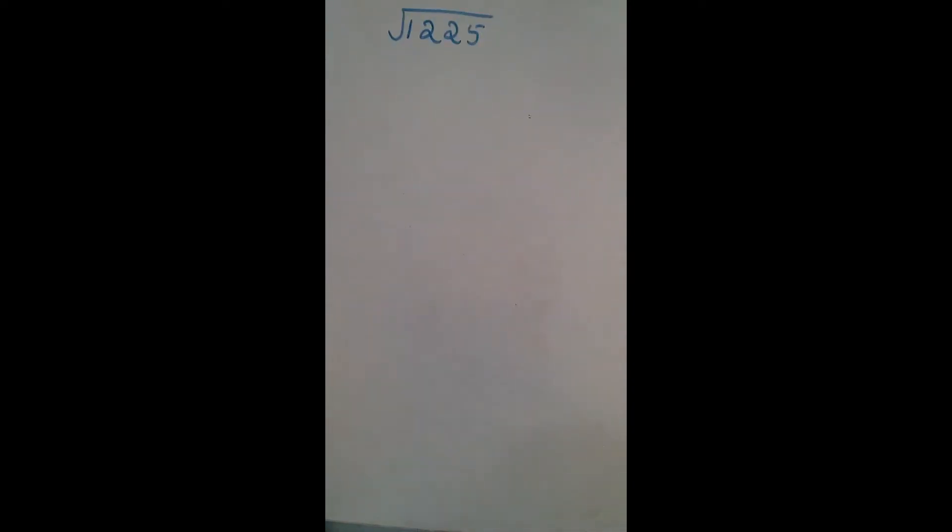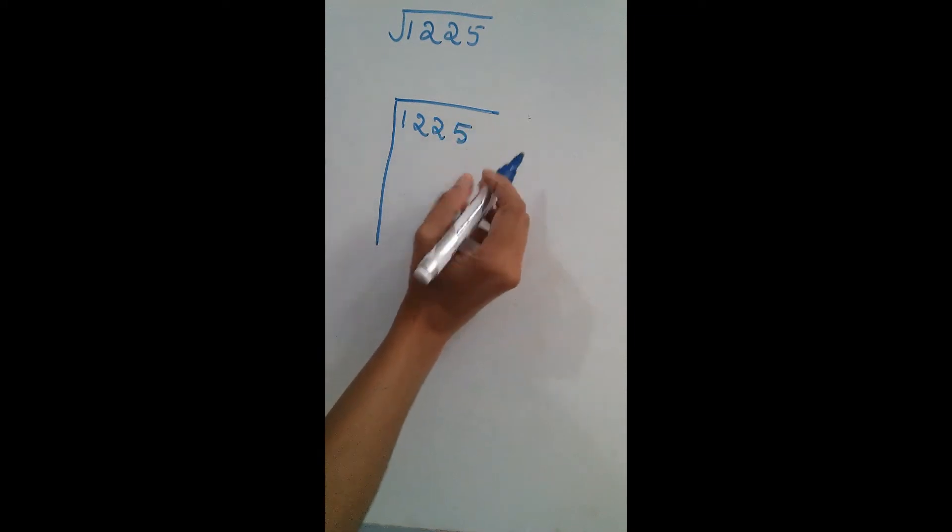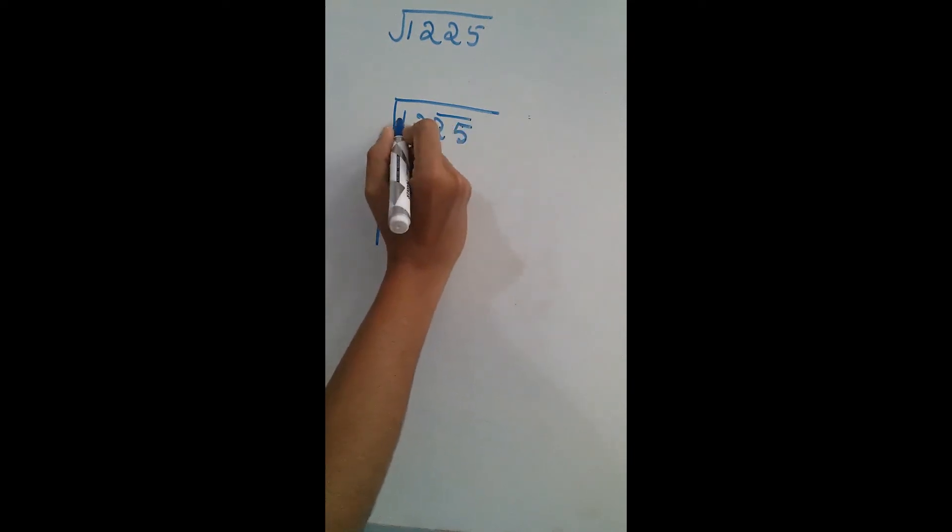Now, we will find square root of 1225 by division method. We will write 1225. Now we are making groups such that from right to left, 1, 2, this is one group. Again, 1, 2, this is one group. And we have to write the number. That is, 3 squared is 9.